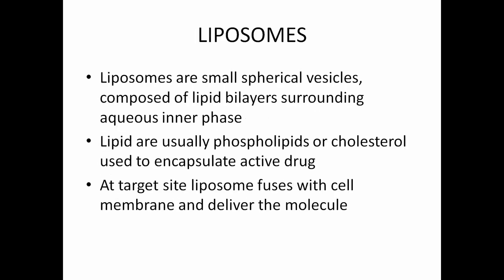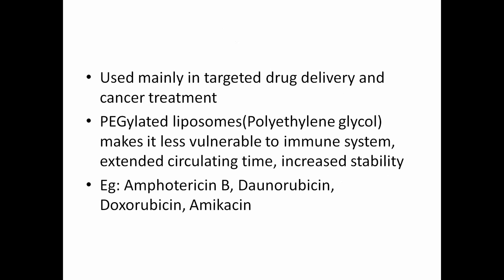Coming to the first group — liposomes. These are small spherical vesicles composed of a lipid bilayer surrounding an aqueous inner face. Lipids are usually phospholipids or cholesterol used to encapsulate the active drug. At the target site, liposomes fuse with the cell membrane and deliver the molecule. They are used mainly in targeted drug delivery and cancer treatment. PEGylated liposomes make them less vulnerable to the immune system, offering extended circulating time and increased stability. Examples of liposomes used in nanodrug delivery include Amphotericin B, daunorubicin, doxorubicin, and amikacin.